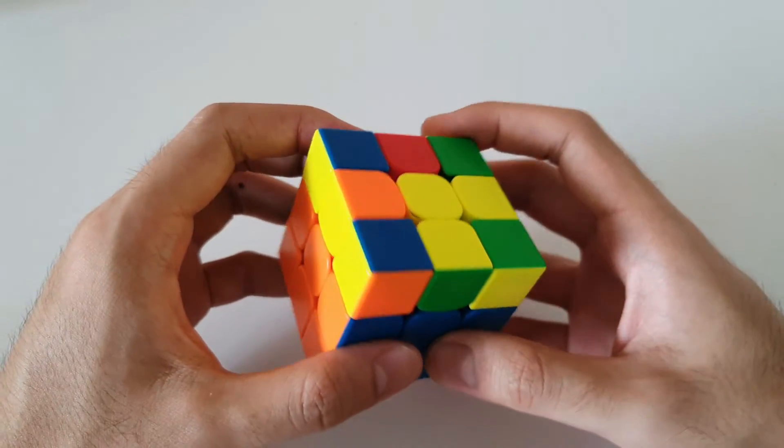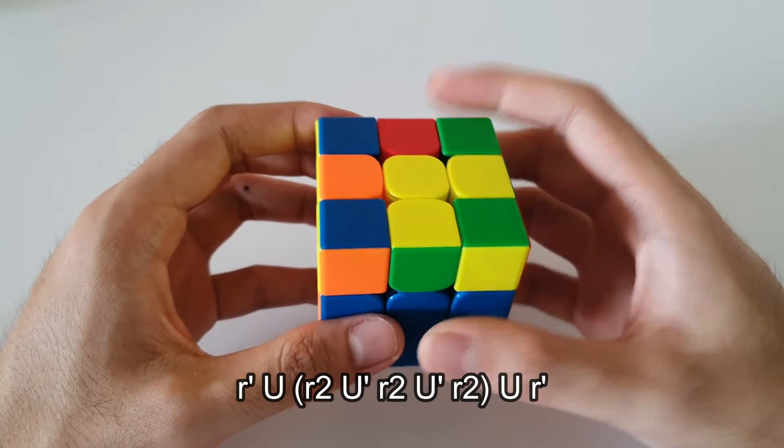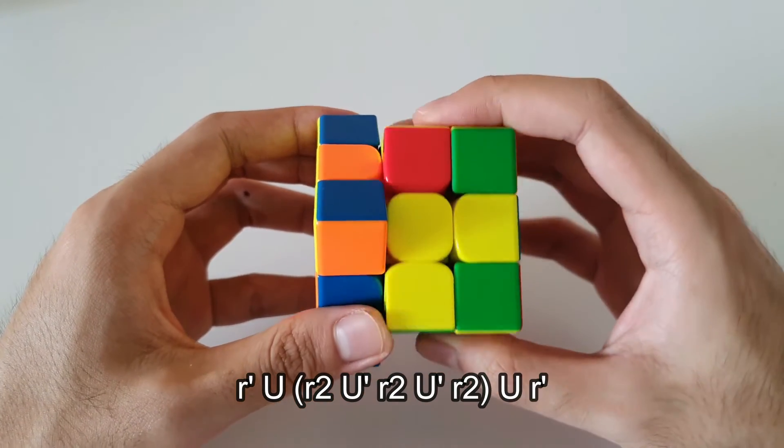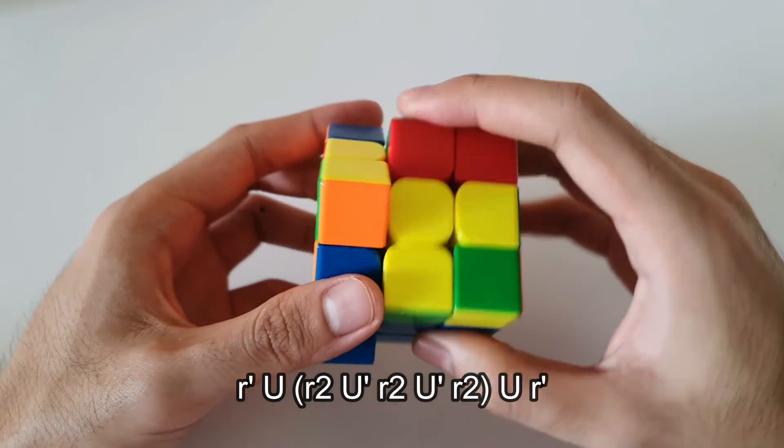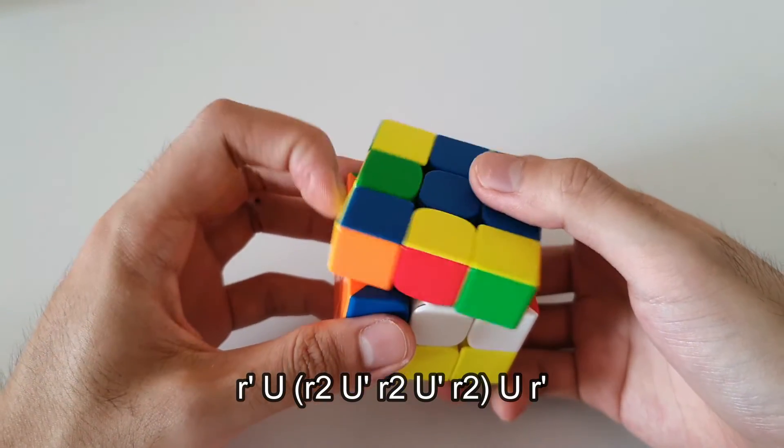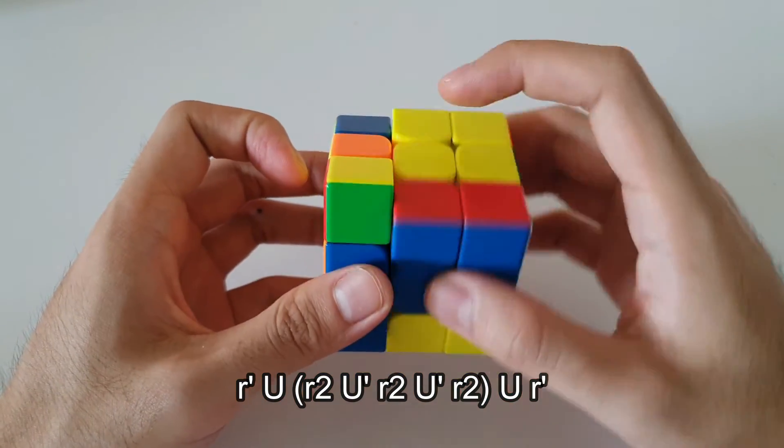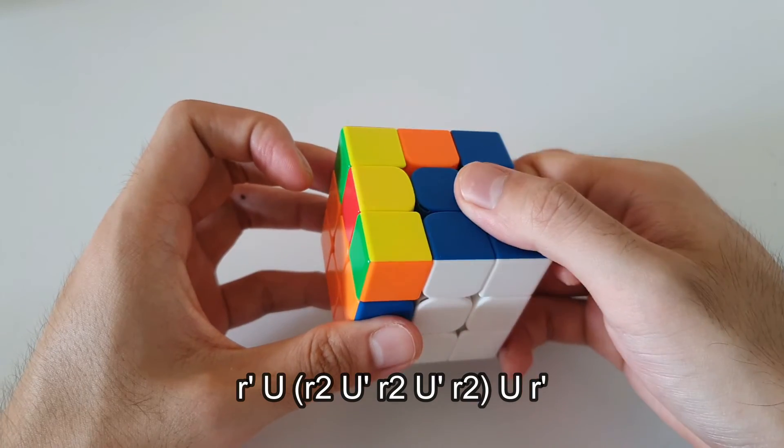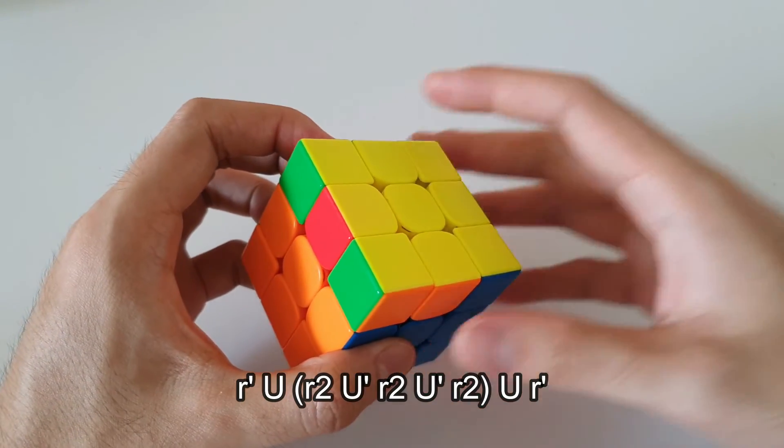The algorithm is very similar as well. So it starts off with an R prime, so wide R prime instead of an R, like this, followed by U, R2, U prime, R2, U prime, got the wide R2 again, followed by a U, and then final wide R prime to finish off the algorithm.